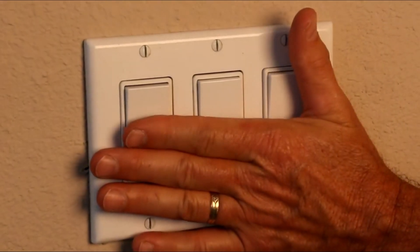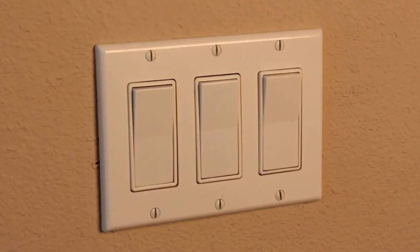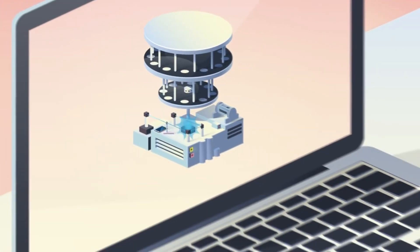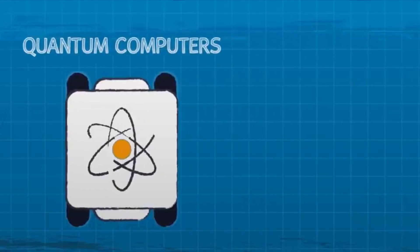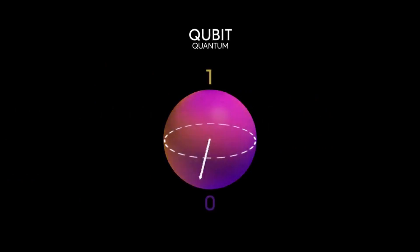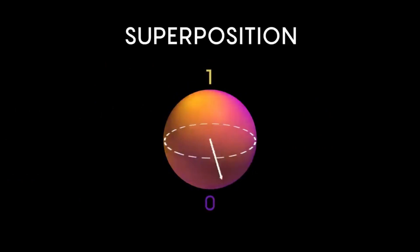Now, imagine if that light switch could be both on and off at the same time, and also fluctuate between these states. Welcome to the world of quantum computing, where instead of bits, we have quantum bits, or qubits. This opens up an entirely new dimension in computing, because qubits can exist in a superposition of states.